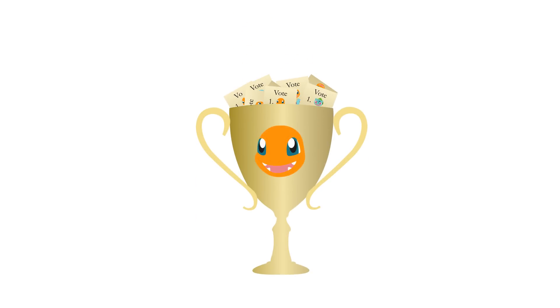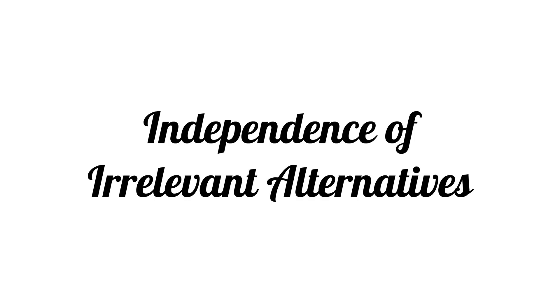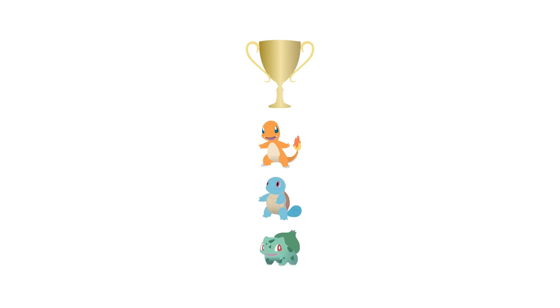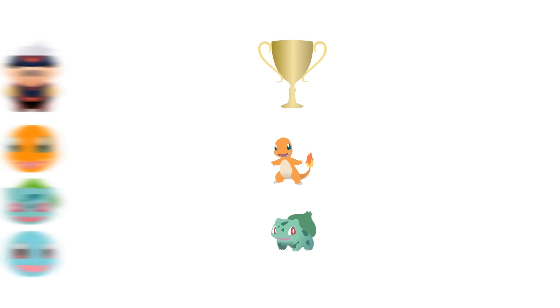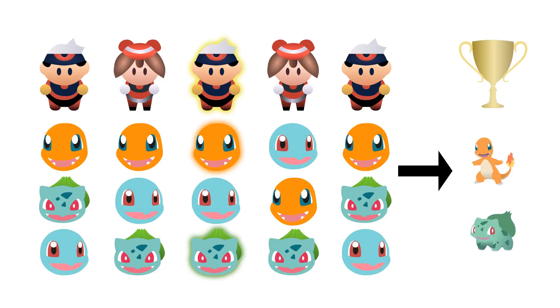So everything we discuss also applies to most current voting systems. As we try to come up with a good way to turn votes into a result, let's think of some important properties we might want. One property is unanimity: if literally every single person prefers Charmander over Bulbasaur, then the result should be that Charmander beats Bulbasaur. Another property is independence of irrelevant alternatives: if the group prefers Charmander over Bulbasaur, removing Squirtle should still leave Charmander over Bulbasaur. Another way to think of it is that if I move Squirtle up or down on my list, it doesn't change that I still like Charmander more than Bulbasaur, so the group's preference shouldn't change.